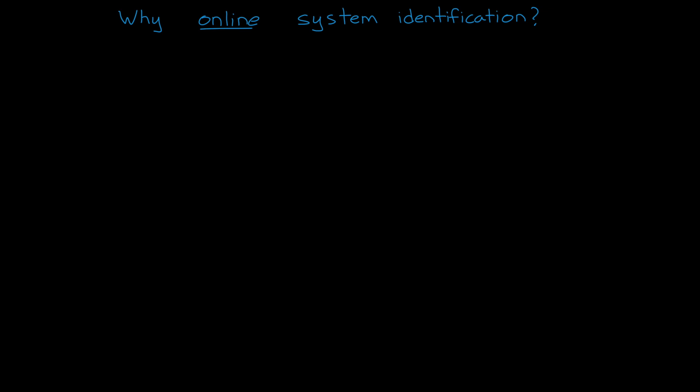So why would we want to solve system identification online, one data point at a time, rather than offline and just all at once? There's lots of reasons. The one reason I want to go into detail on is that online system identification is useful if the system changes over time, or the parameters of the model are time varying, and you want the model to constantly adapt to it or recognize those changes.